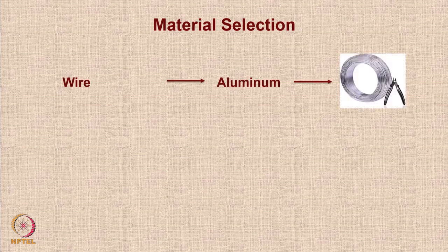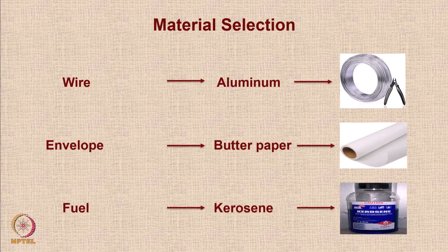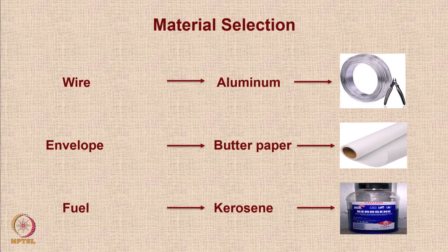Regarding material selection, there are many choices. One could use aluminum wire on the bottom to hold the small container to mount the fuel. The envelope was considered best made from butter paper in this exercise, but you could change it to your requirement. The fuel used is industrial kerosene, though experiments at other universities with domestic kerosene have worked almost equally well.